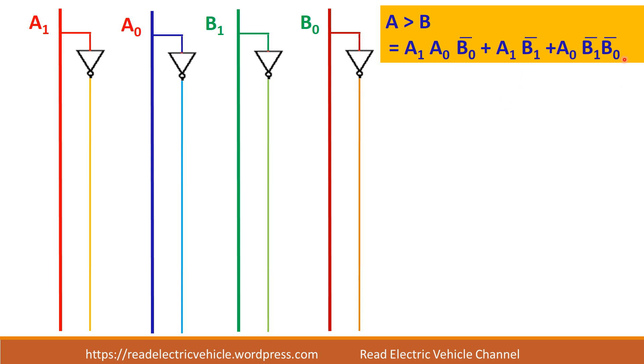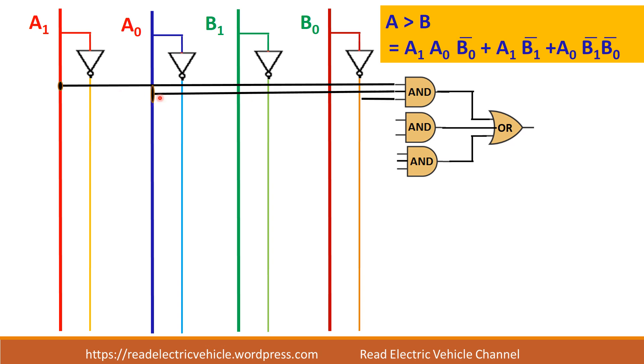So plus sign is here. So you need a OR gate. So three AND gates and which will be connected to a OR gate to get this expression A greater than B. So this is A1 is here. A0 is here. B0 bar. Then A1, B1 bar. A0, B1 bar, B0 bar. So we have connected everything. So you will get the expression for A greater than B.